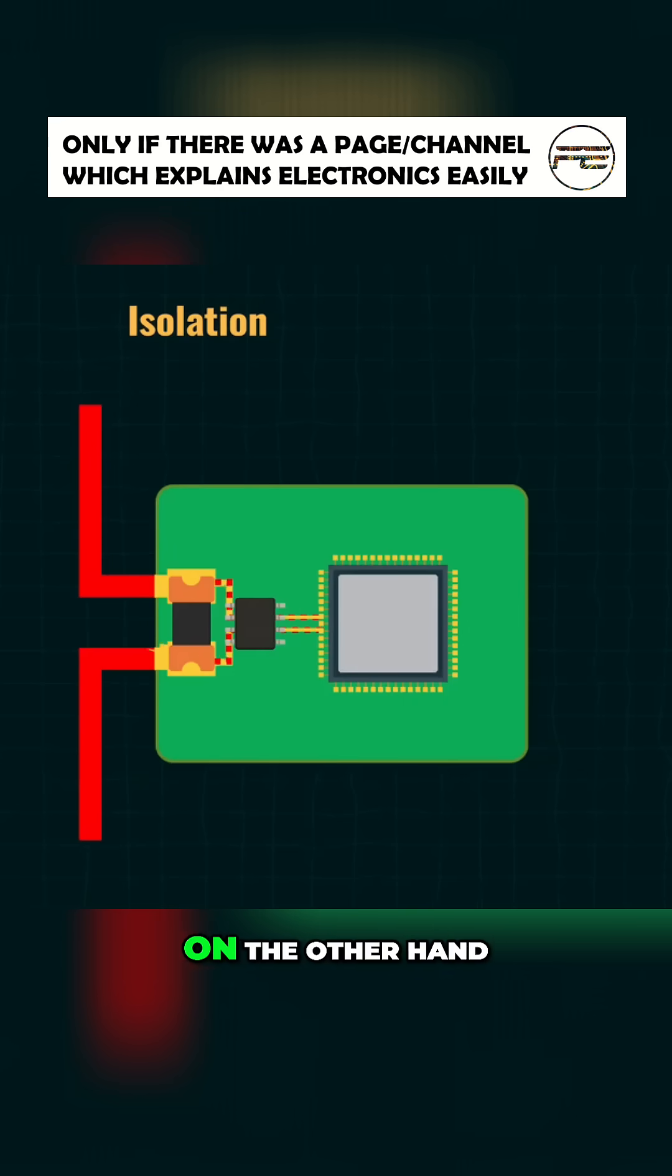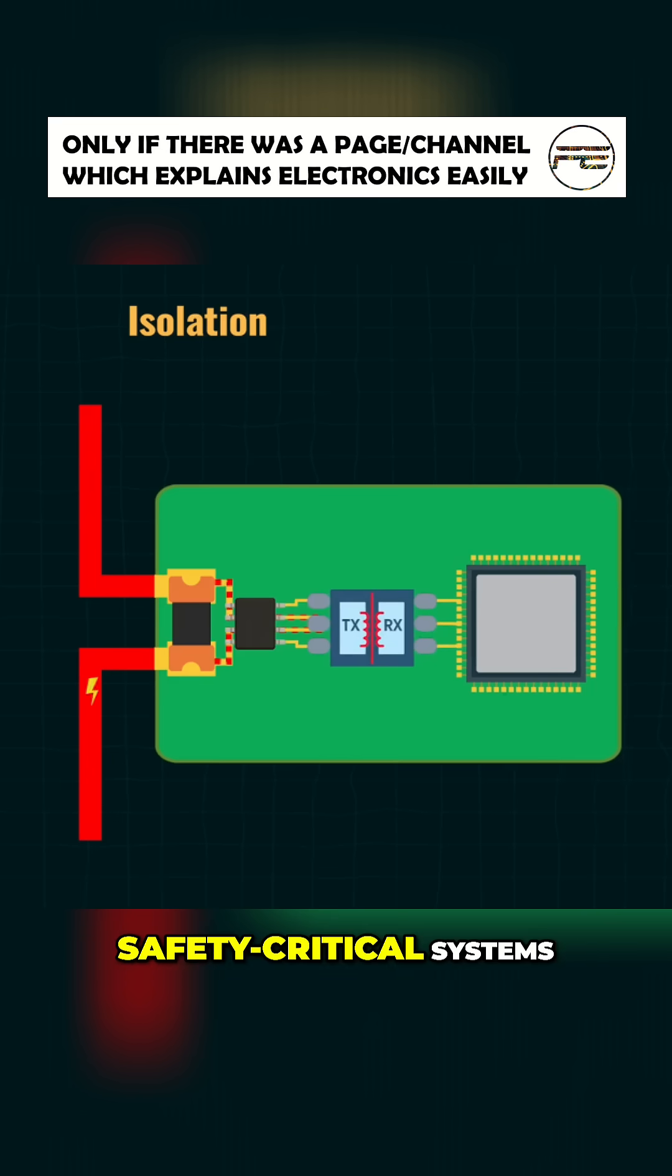Shunt sensors, on the other hand, do not provide isolation by default. In low voltage systems, this usually isn't a problem. But in high voltage or safety critical systems, extra isolation components might be needed if we're using a shunt.